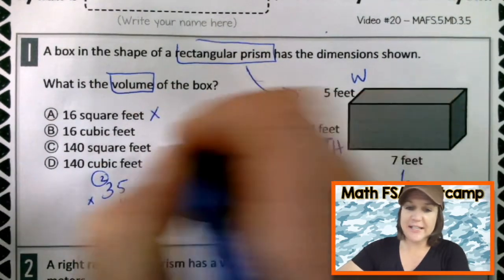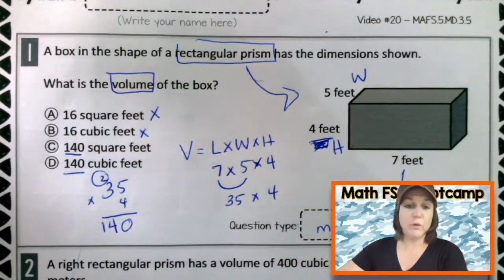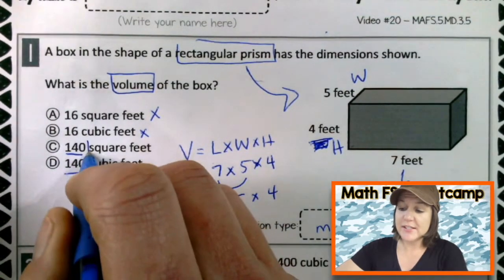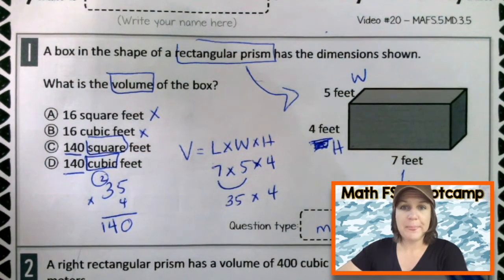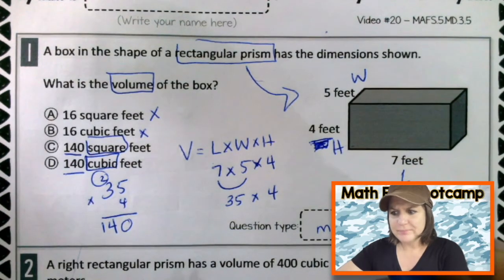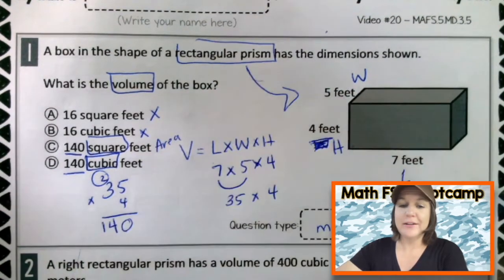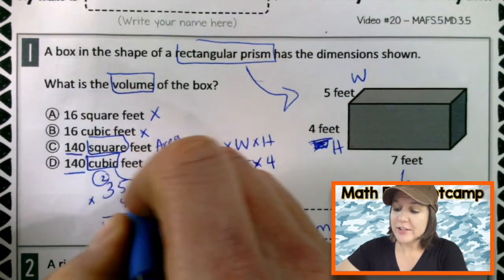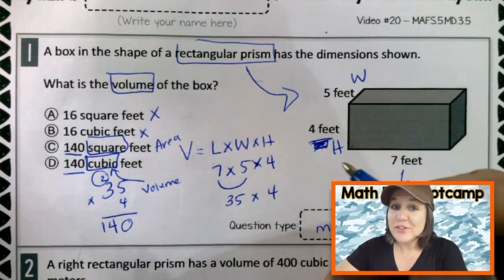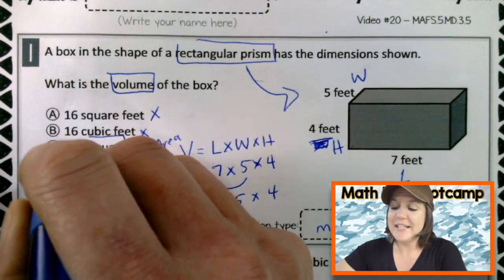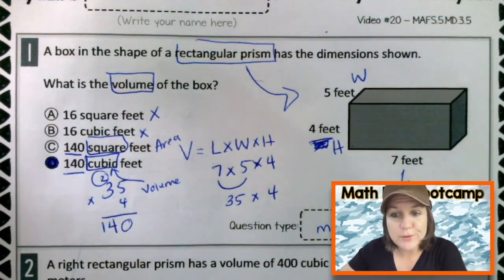So we know it's not 16. It's not 16, but we do have two 140s. The only difference is the square feet and the cubic feet. Okay. So which one is right? Square feet is when we're referring to the area. Cubic feet is when we are referring to volume. So the answer that is correct would be choice D, 140 cubic feet or feet cubed.